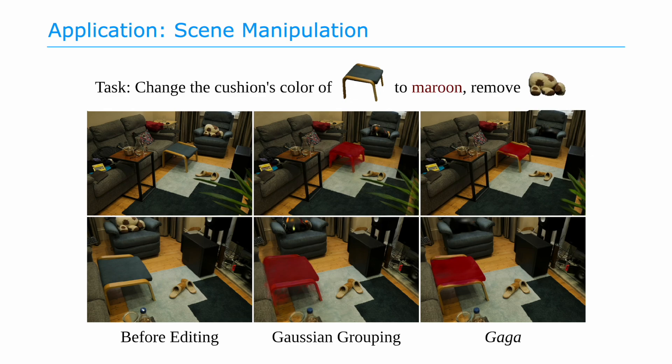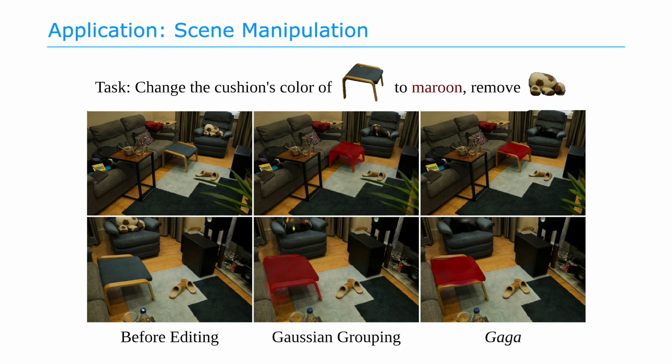We change the color of the cushion in the footstool and remove the stuffed animal on the armchair. GAGA accurately identifies 3D Gaussians representing the cushion, while the previous method fails, coloring the entire footstool maroon along with part of the sofa and some floating Gaussians. GAGA also effectively groups and removes the entire stuffed animal on the sofa with minimal artifacts, whereas the previous method leaves many floating Gaussians.